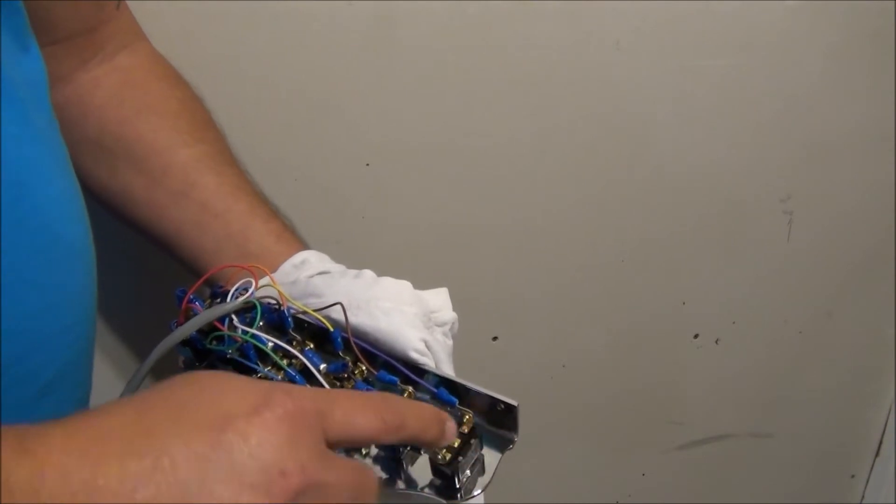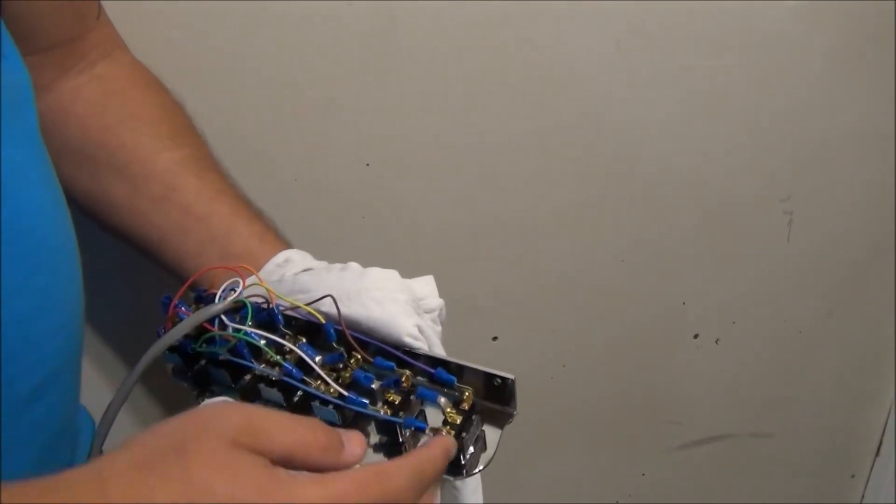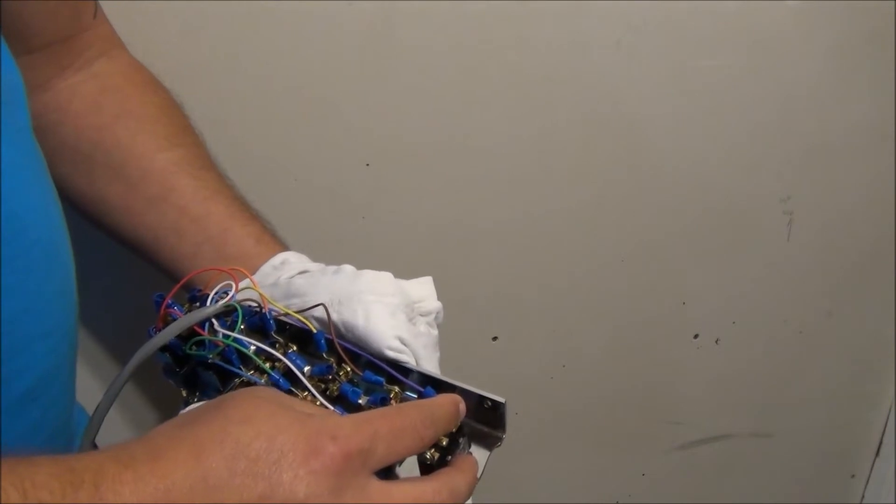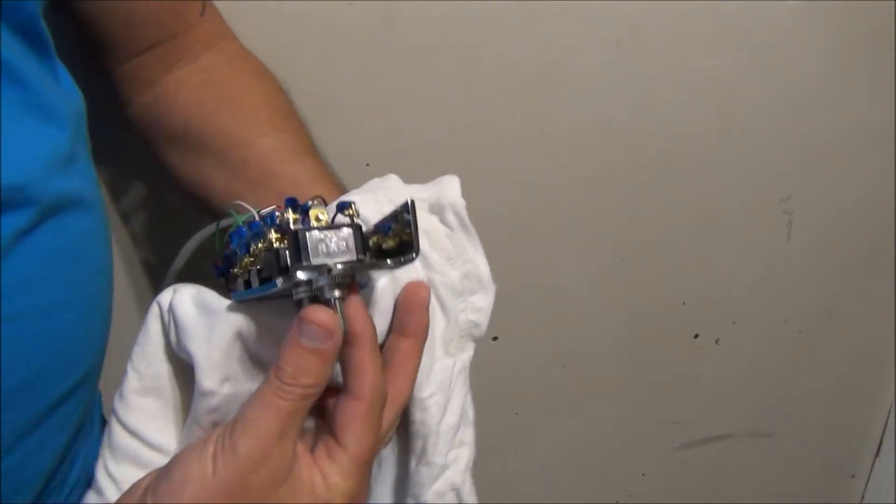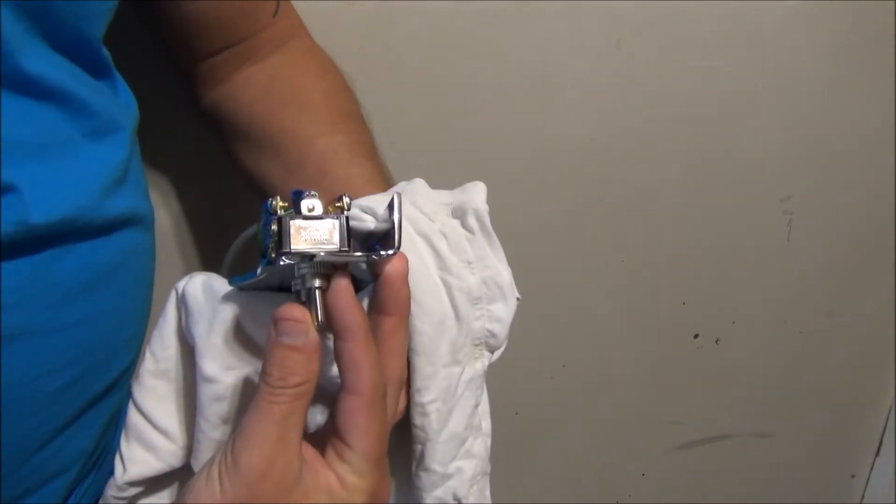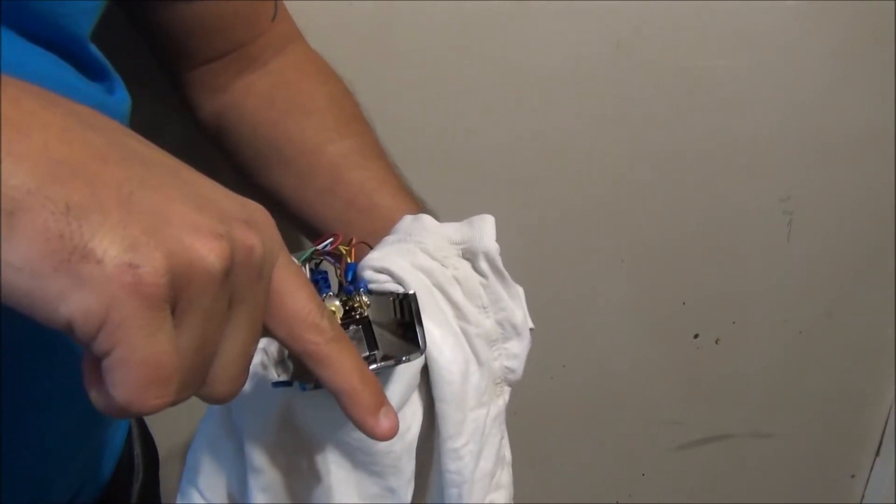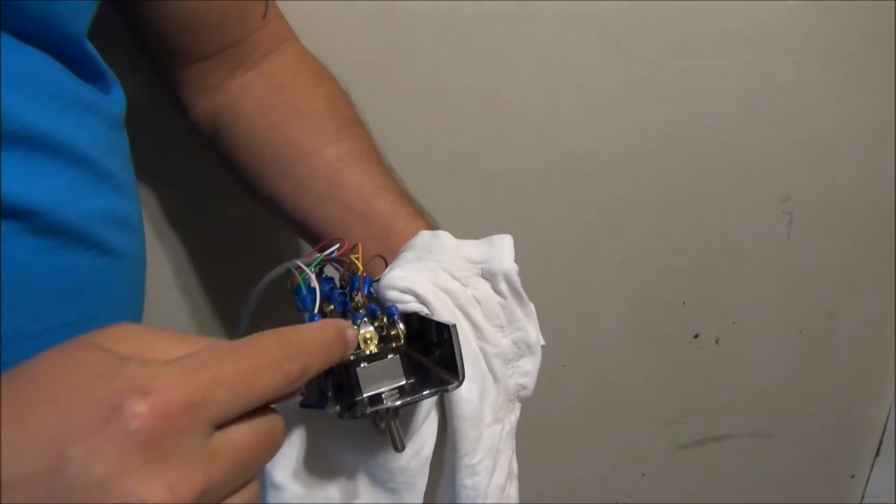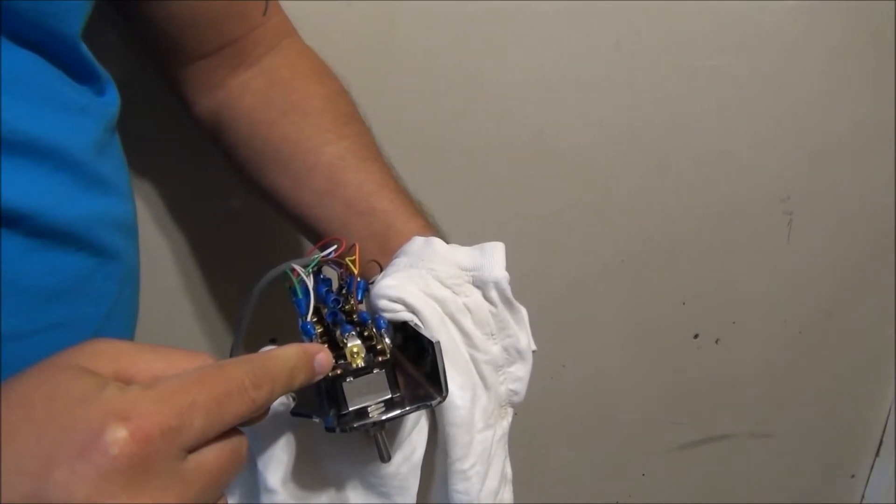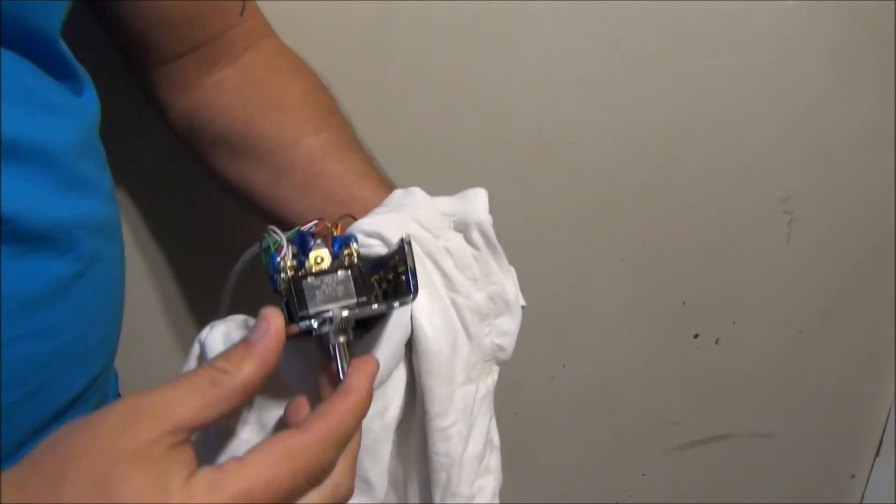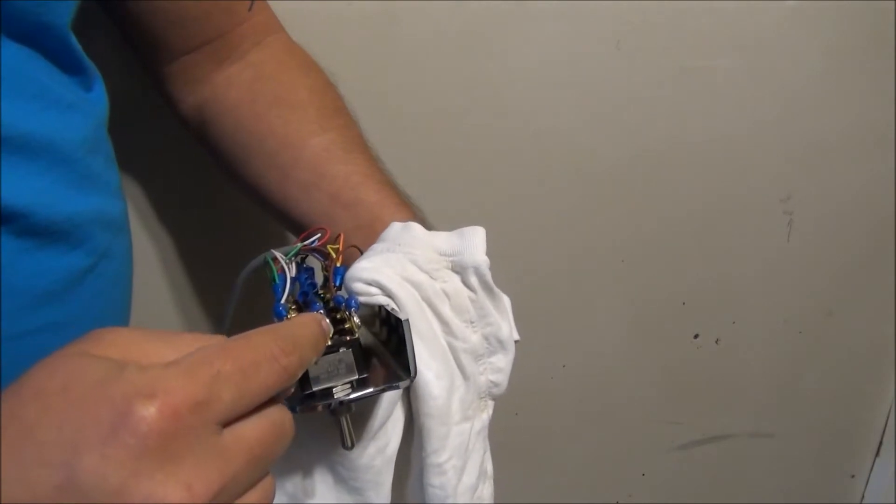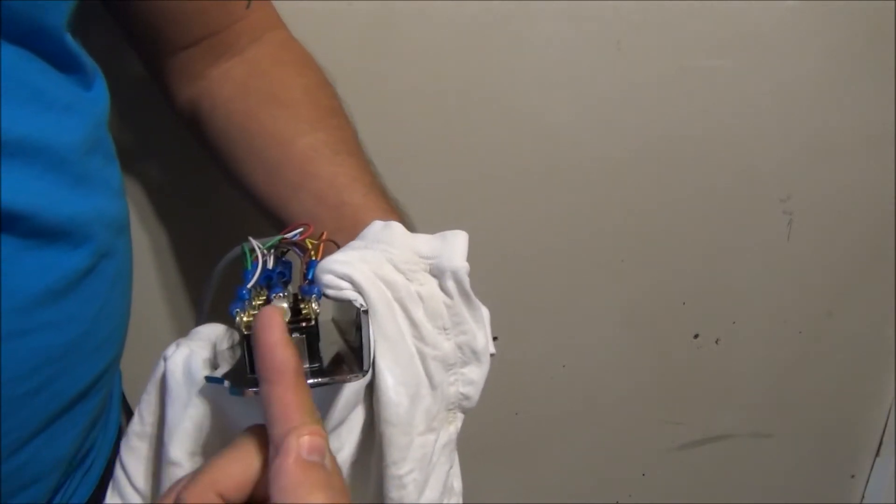You get a three-prong switch: the middle is power, one side is lift, one side is lower. With the switches, the way that they work, when you hit the switch to go up, it's completing the circuit to this side, so the power is now sending to this side. When you hit it down, it's sending the power from the center to right here.